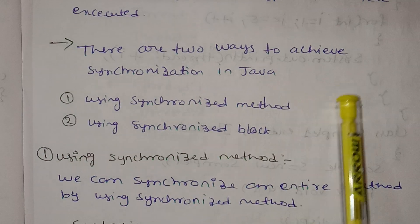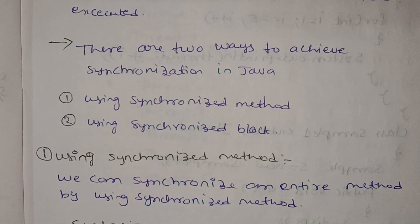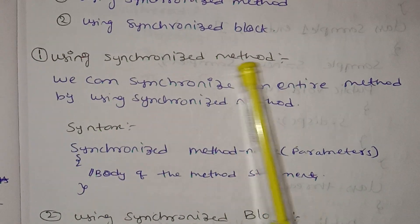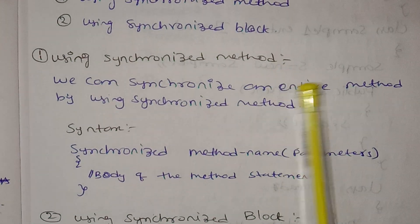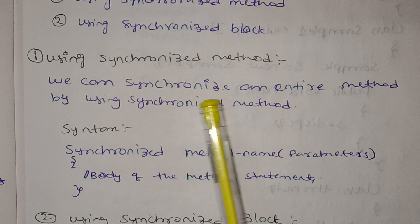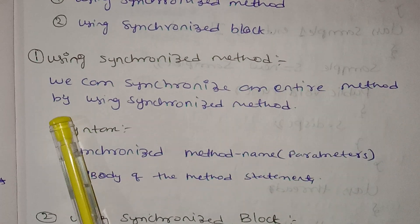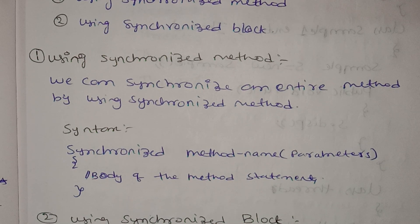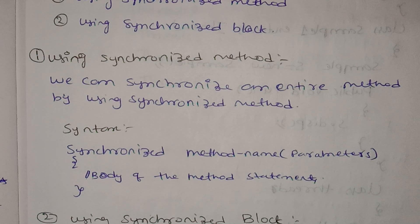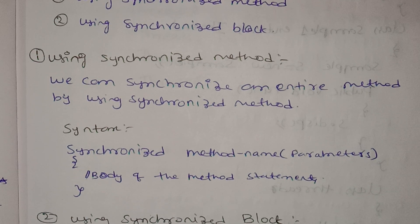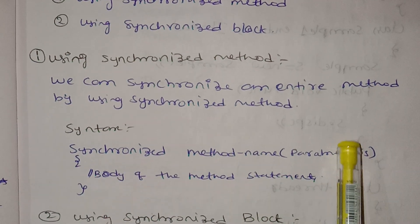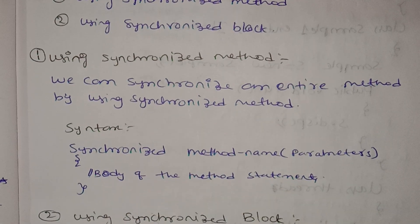There are two ways to achieve synchronization: using a synchronized method and using a synchronized block. Using the synchronized method, we can use the same method — we can enter a thread, we need the exact execution. When we lock this thread we need the synchronized method. The method has a name and parameters, then the body of the method with statements.